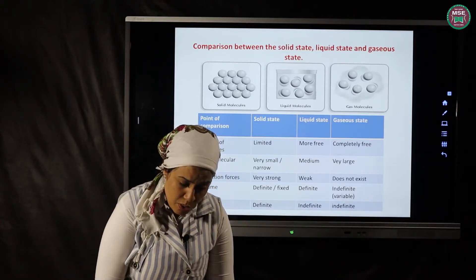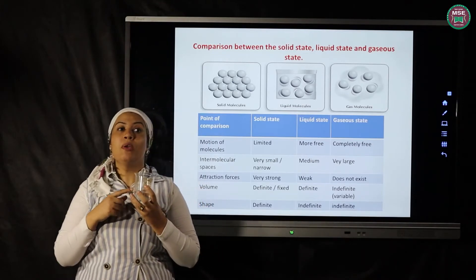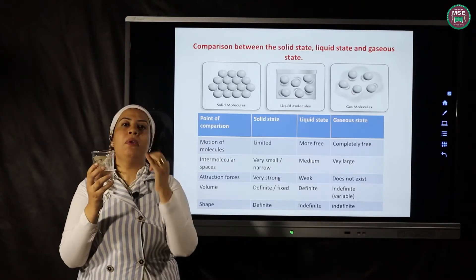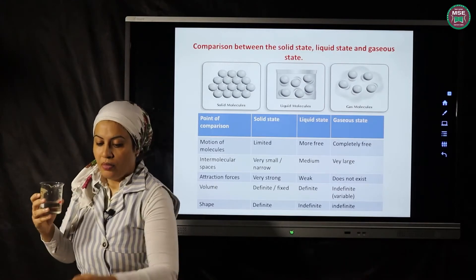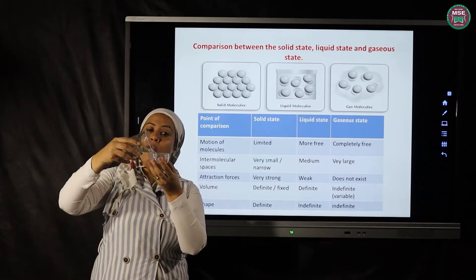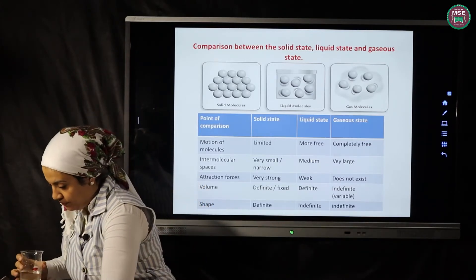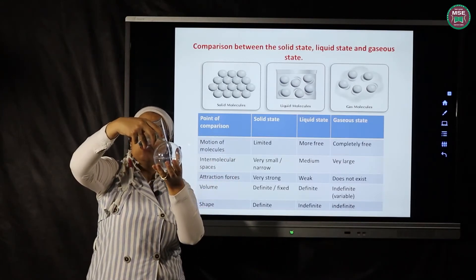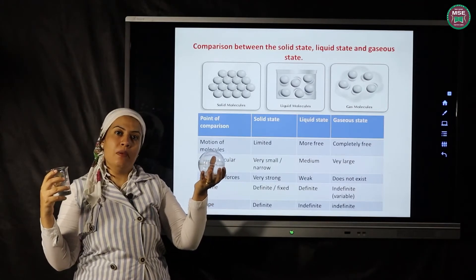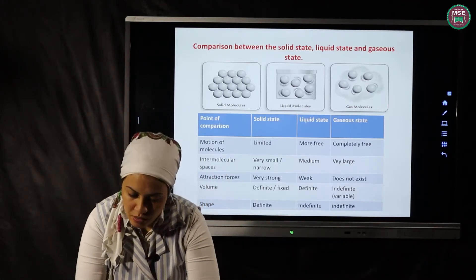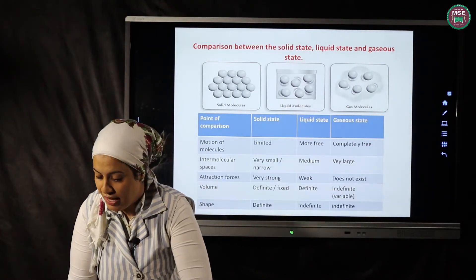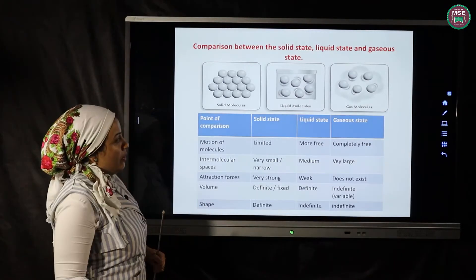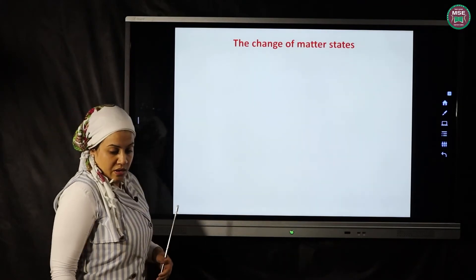Liquids change their shape because they take the shape of their container — if put in a beaker, the liquid takes the beaker's shape; in a plastic cup, it takes the cup's shape; in a circular shape, it takes that shape. So liquid has an indefinite shape but definite volume. Gas changes both shape and volume, so it has indefinite shape and indefinite volume.